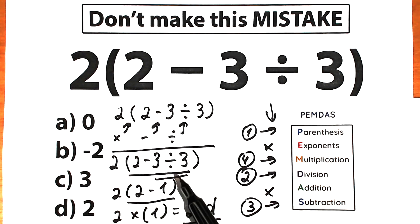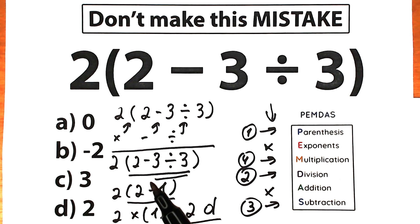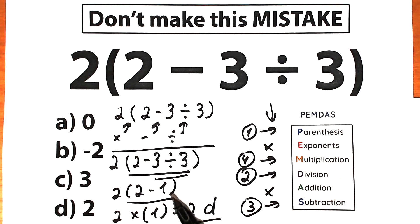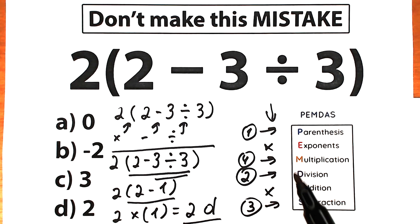We solved our challenge according to PEMDAS. First we found our parentheses and evaluated the expression inside. Inside parentheses we had two signs — subtraction and division. First we divided because division has higher priority: 3 divided by 3 equals 1. Our second step was subtraction: 2 minus 1, which is equal to 1. Our last step was multiplication: 2 times 1, which is equal to 2. Option D is the correct answer to this challenge.